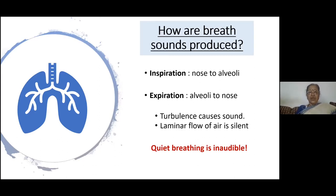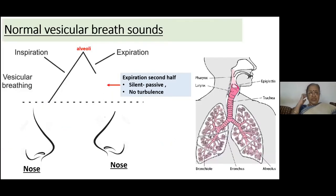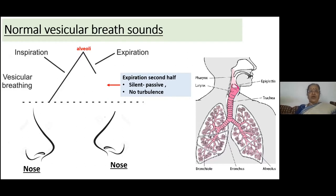Inspiration is from nose to alveoli; expiration is from alveoli back to nose — that's what this diagram represents. You can see that inspiration basically begins and goes up to the alveoli, and then back out through the nose. We all know that the second part of respiration — expiration — is silent. It's not that air is not moving or you're breathing to a two-is-to-one ratio; it's just that you're not hearing that part of expiration because it's a passive flow of air.